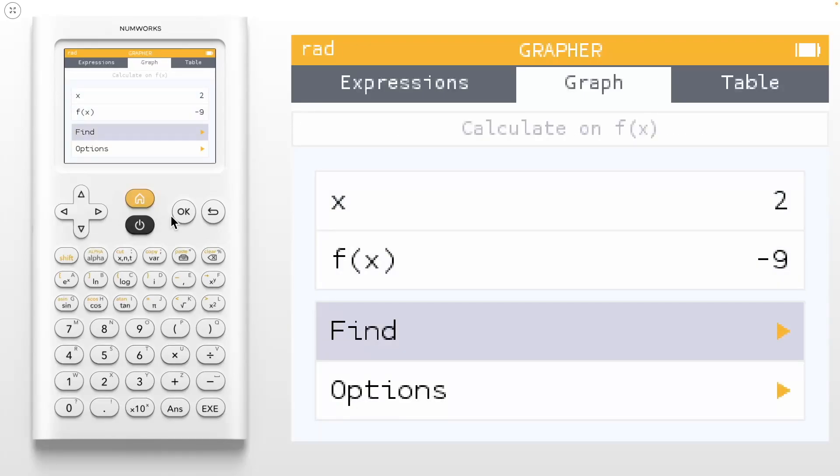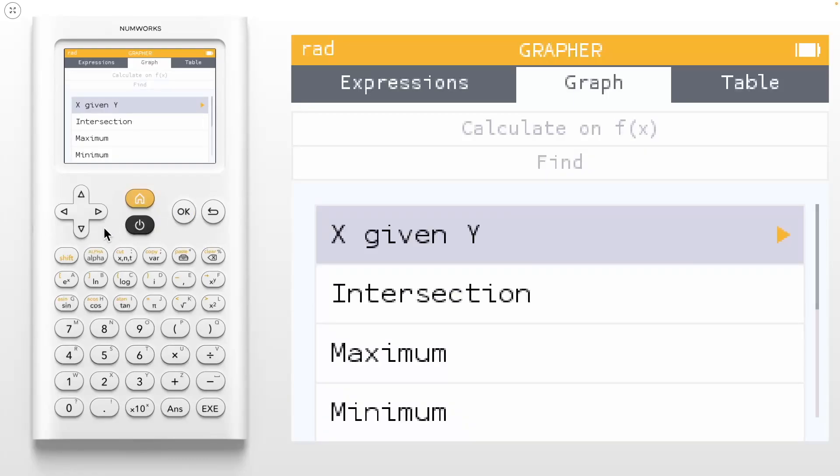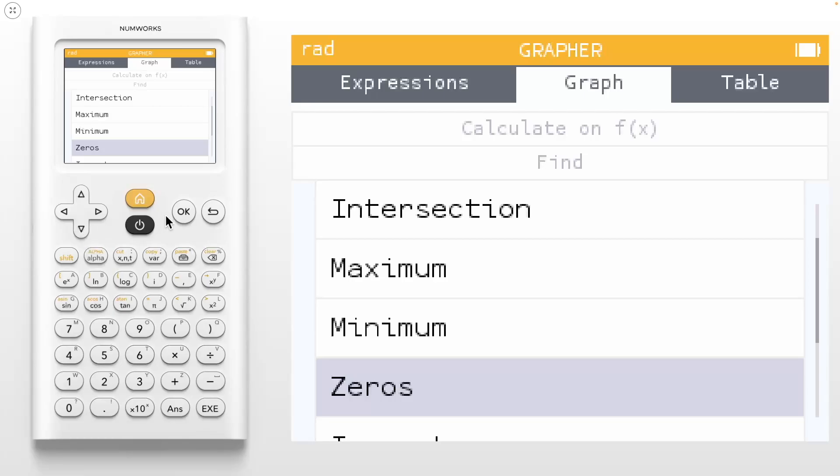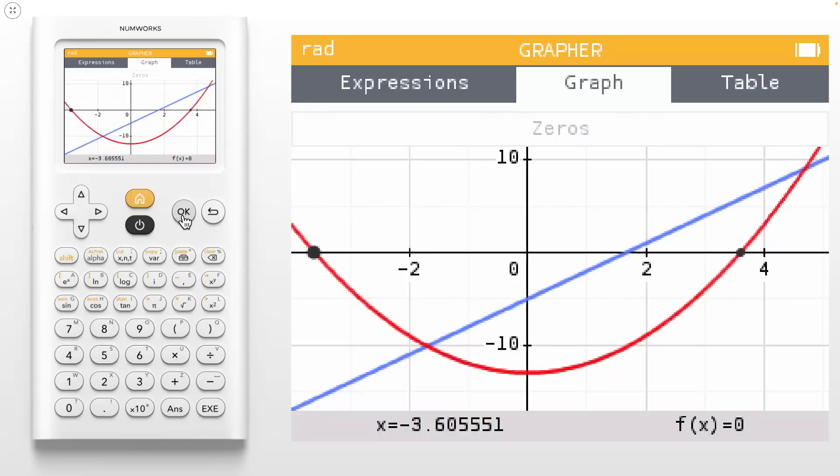Now let's go into our find menu. X given y is what we just did, but you can focus in on intersections, max, mins, or zeros. For example, press OK on zeros. Here you will see that we are right on a zero. No left bound, right bound, just on it. We can also quickly navigate to the other zero.